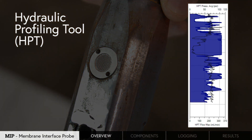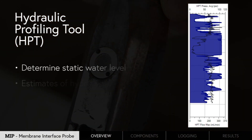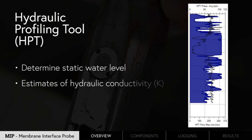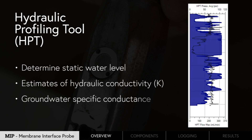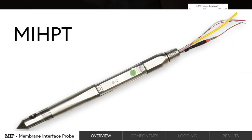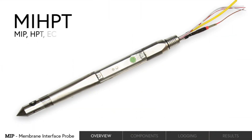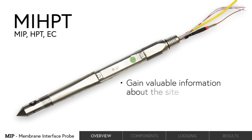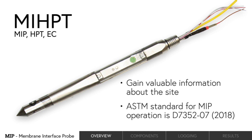Calculations can be performed on this data to determine static water level, estimates of hydraulic conductivity, as well as groundwater specific conductance where the formation allows. By operating MIP, HPT, and EC sensors together, operators and end users can gain valuable information about their site. The ASTM standard for MIP operation is D7352.